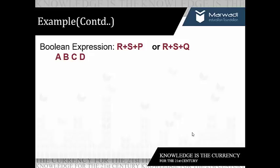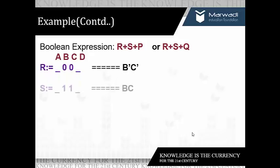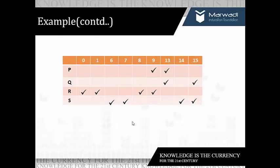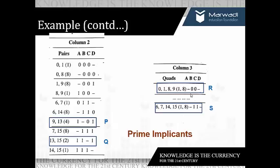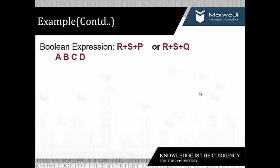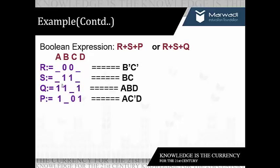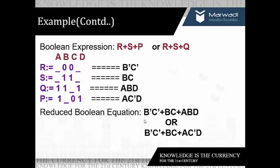Now let's express the final boolean expression in terms of variables A, B, C, and D. R corresponds to --00-- which gives B̄C̄. S corresponds to --11-- which gives BC. Q is 1-1-1 which gives ABD. P is A·C̄·D. The final reduced boolean expression is: R + S + P = B̄C̄ + BC + AC̄D, or R + S + Q = B̄C̄ + BC + ABD.